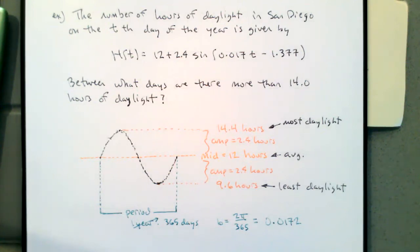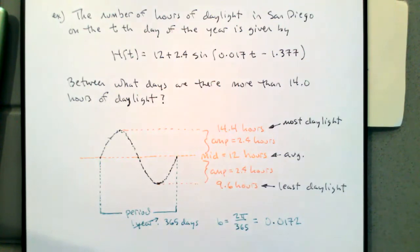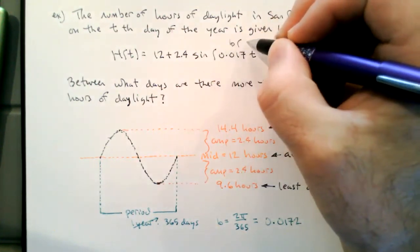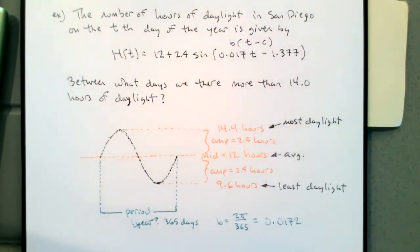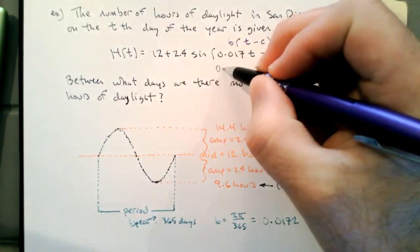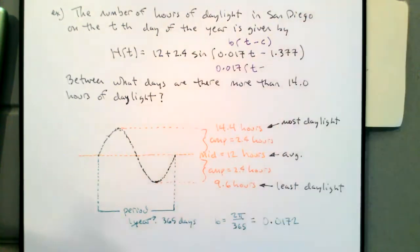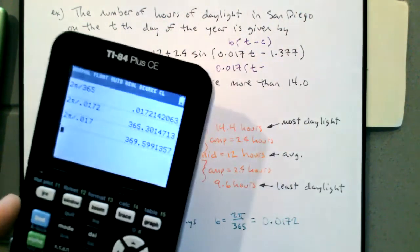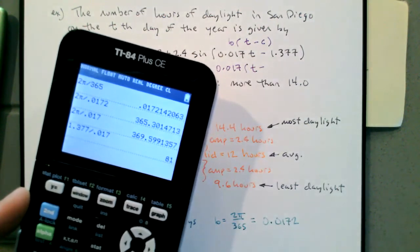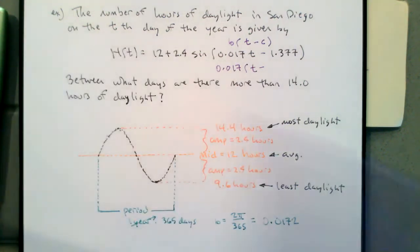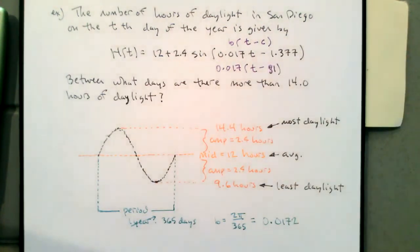The 0.017 has been multiplied through. Normally we have B factored out, looking like B times (T minus C). So the 1.377 is not just the horizontal shift — it's the horizontal shift multiplied by the coefficient of T, i.e., B times C. To find the actual horizontal shift C, I divide 1.377 by 0.017, which gives 81.